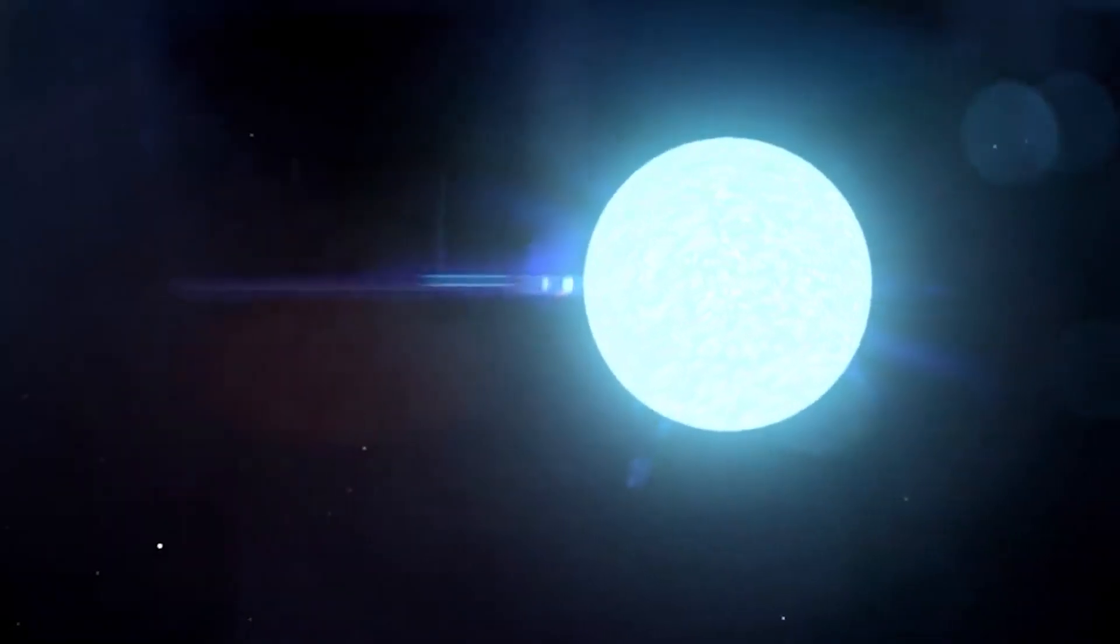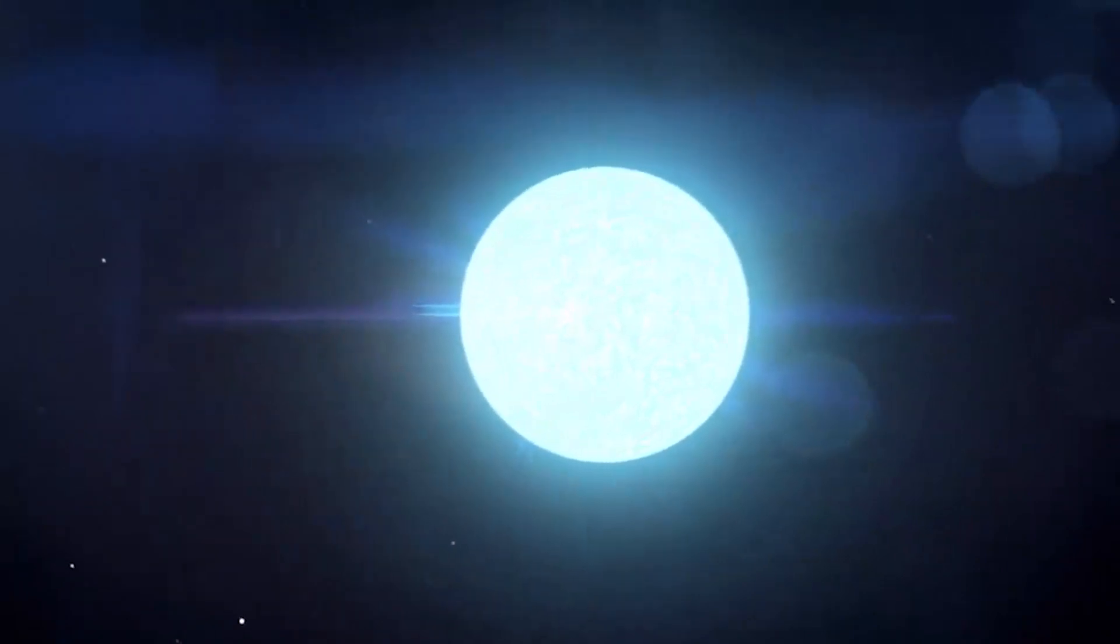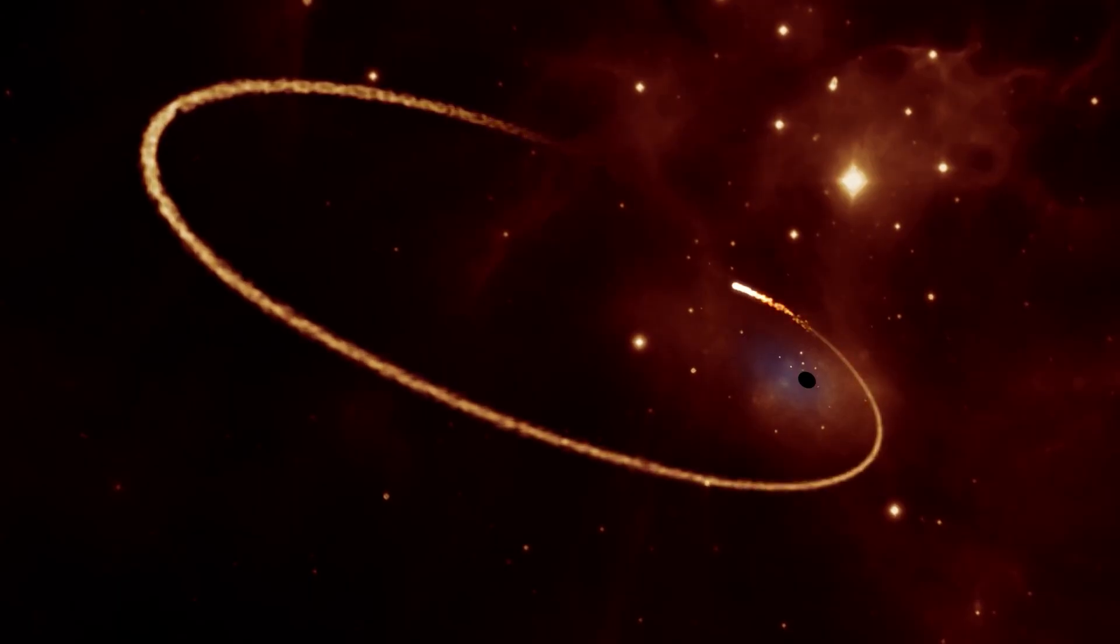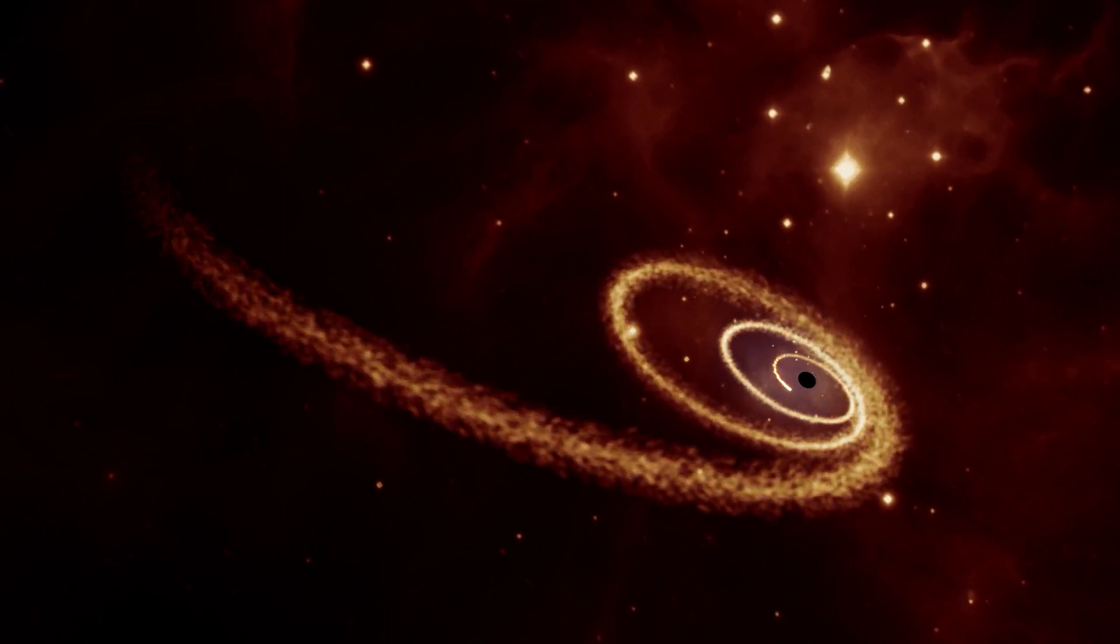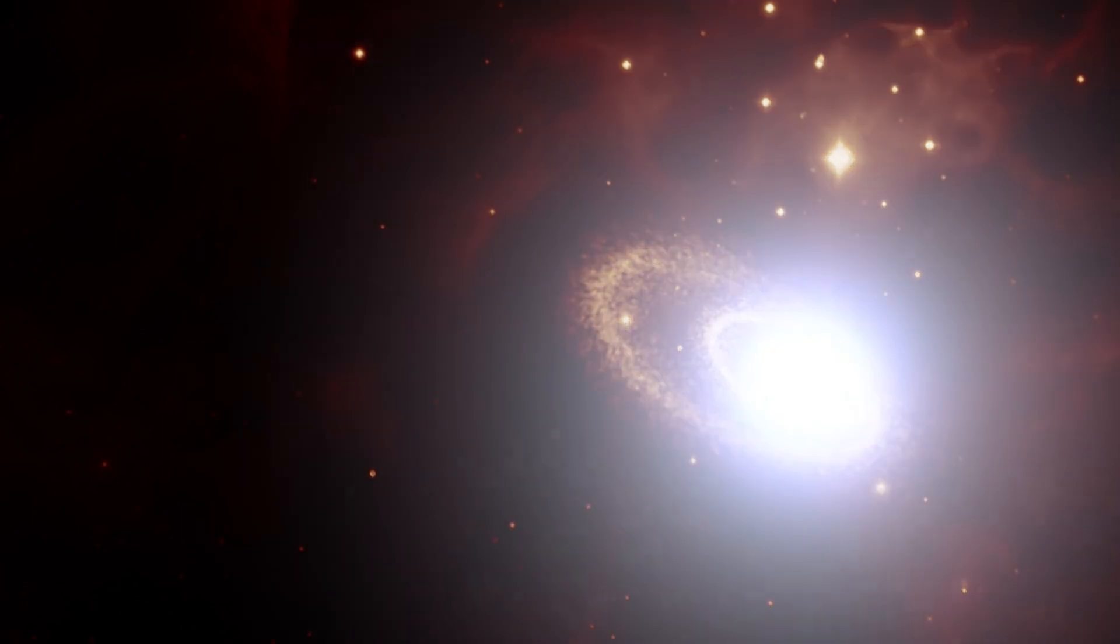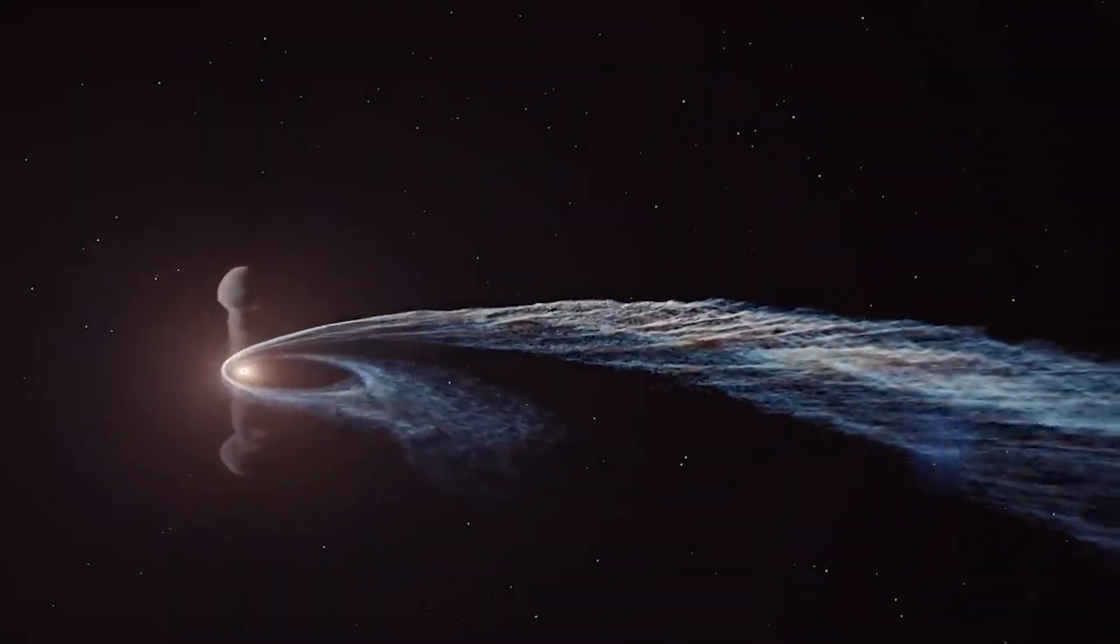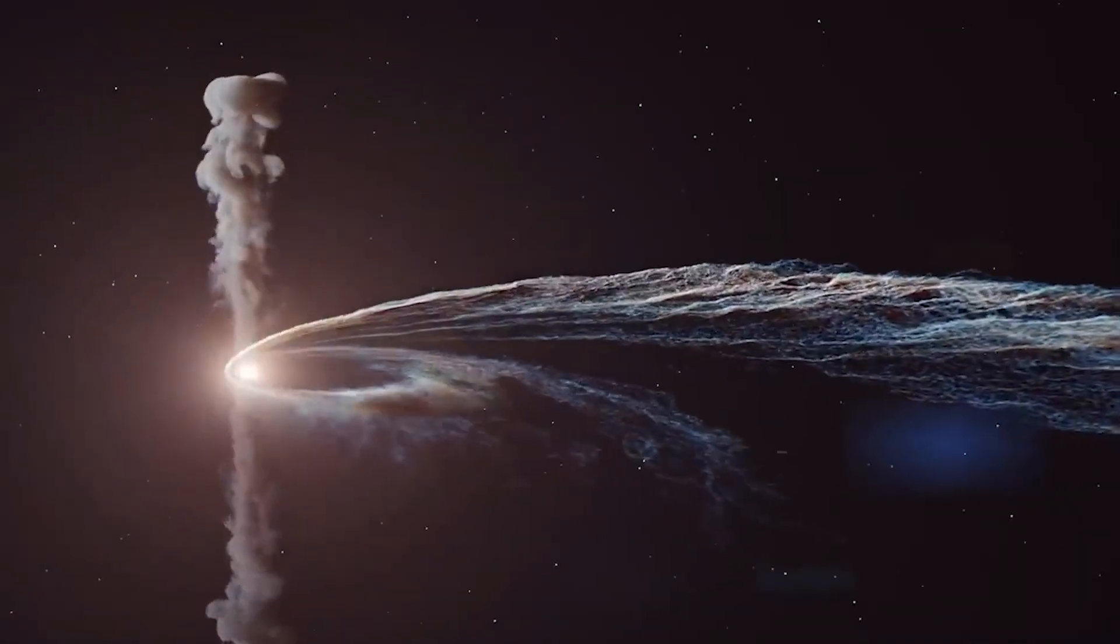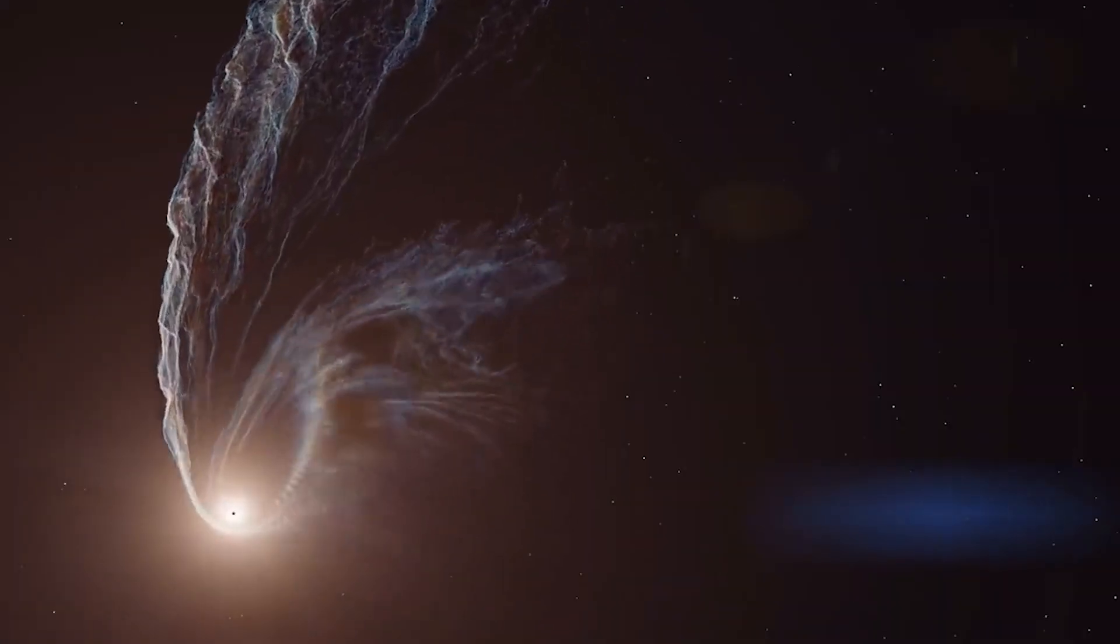But what made this TDE particularly unique was that, against all odds, the star managed to survive. Normally, a TDE would result in the complete destruction of the star. But in this case, the black hole's tidal forces were not strong enough to completely shred the star. Instead, a portion of the star's core managed to remain intact, despite being stretched and elongated. This is the first time scientists have observed such a survival, and has provided valuable insights into the behaviour of matter in the extreme conditions near a black hole.